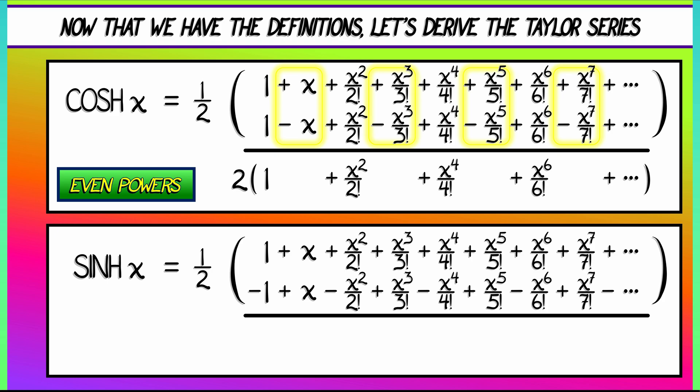What happens with hyperbolic sine? Well, because of that minus sign that was out in front, now all of the even degree terms cancel out. And we are left with twice every odd degree term: x, x cubed over 3 factorial, x to the 5th over 5 factorial. We keep all of the odd powers.